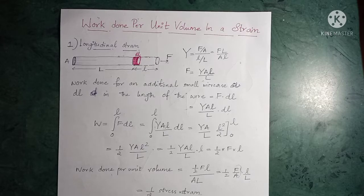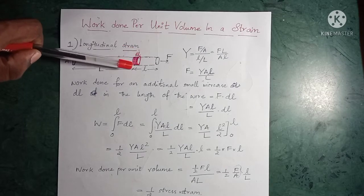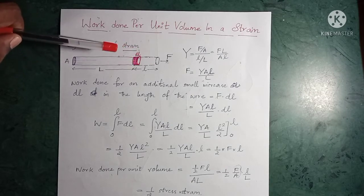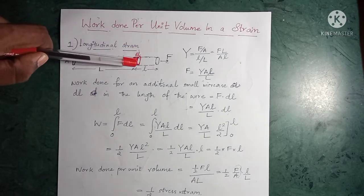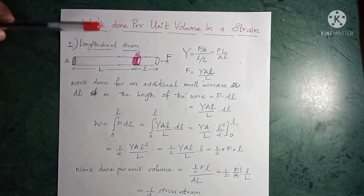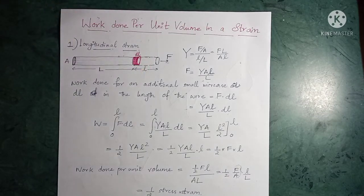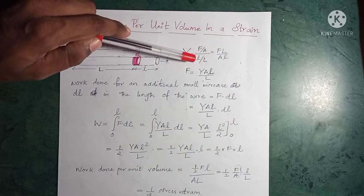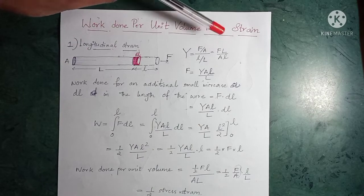First, let's consider longitudinal strain. As shown in the figure, we have a wire and we apply a force along the direction normal to the cross-sectional area. This causes a stretch, adding an additional length small L to the wire. The original length was capital L. We can write Young's modulus Y as stress by strain, which is (F/A) divided by (l/L), and from this, force F can be expressed in terms of Young's modulus.